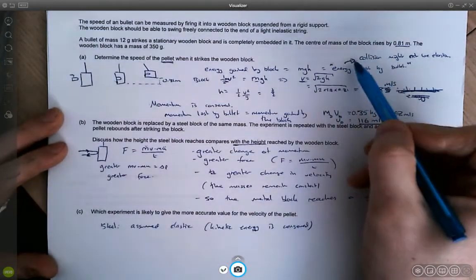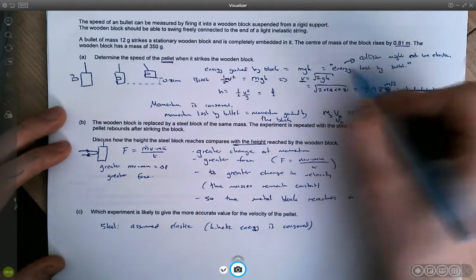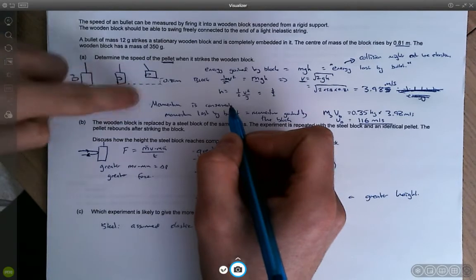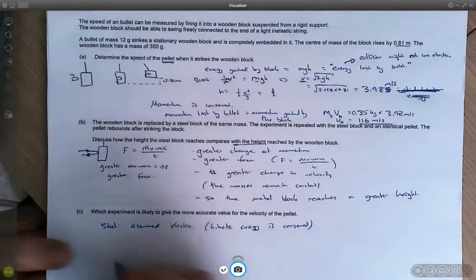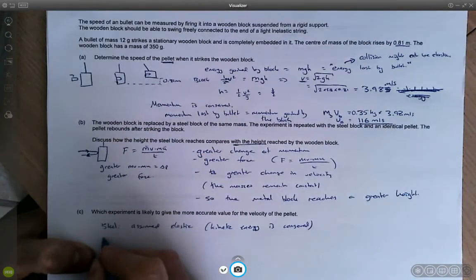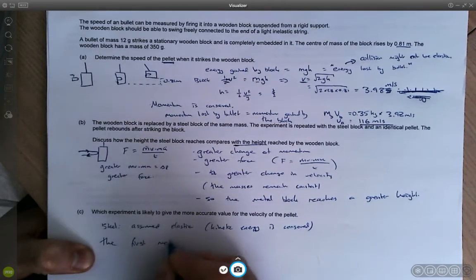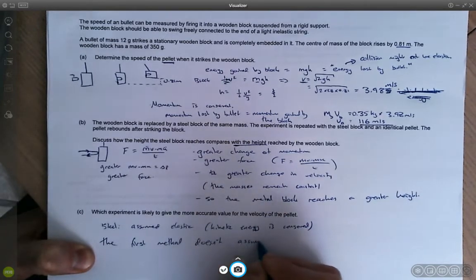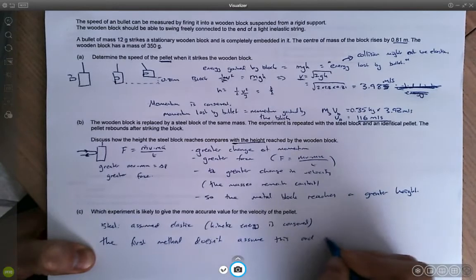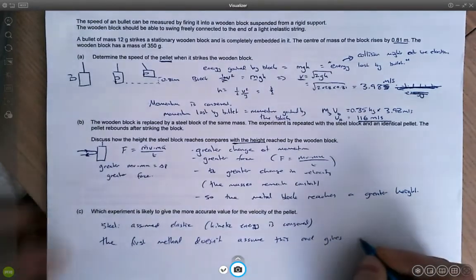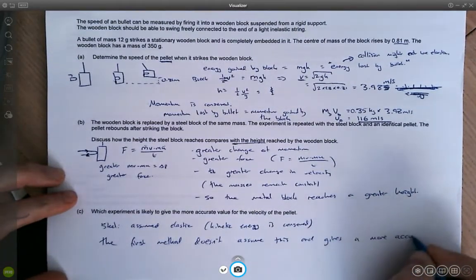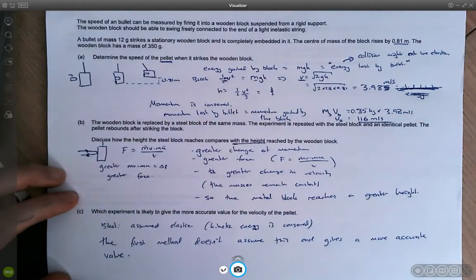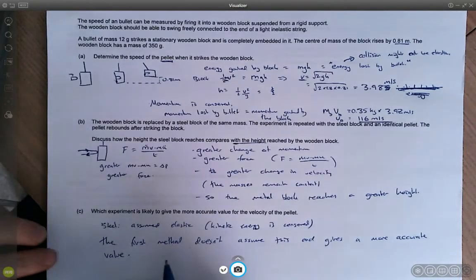Have we done that with the first method? Well, initially, we started doing that. And then I said, well, actually, we don't know if that's true. And we changed it and we looked at what is conserved momentum. So in part a, we actually haven't assumed anything. So therefore, the first method doesn't assume this. And gives a more accurate value.